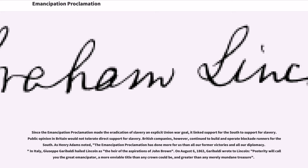As Henry Adams noted, 'the Emancipation Proclamation has done more for us than all our former victories and all our diplomacy.' In Italy, Giuseppe Garibaldi hailed Lincoln as the heir of the aspirations of John Brown. On August 6, 1863, Garibaldi wrote to Lincoln: 'Posterity will call you the great emancipator, a more enviable title than any crown could be, and greater than any merely mundane treasure.'